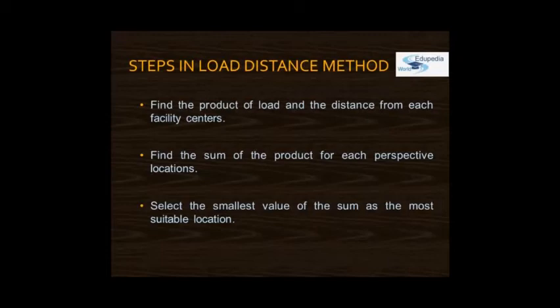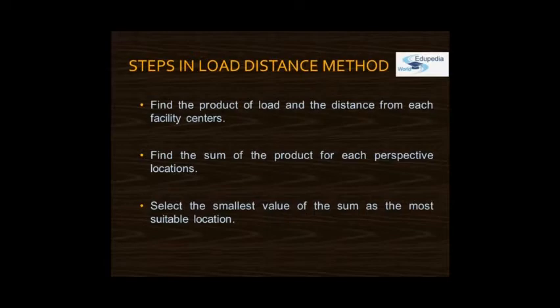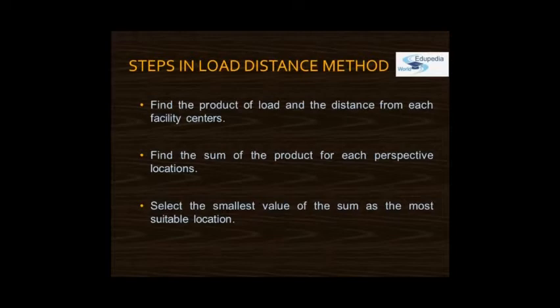To illustrate: say we have two prospective locations A at (2,2) and B at (6,6), and two supply centers S1 at (5,2) and S2 at (3,5). Using rectilinear distance, A to S2 = |2−3| + |2−5| = 1 + 3 = 4, and A to S1 = |2−5| + |2−2| = 3 + 0 = 3. The loads are 100 units from S1 and 200 units from S2. The smallest sum is selected as the most suitable location.